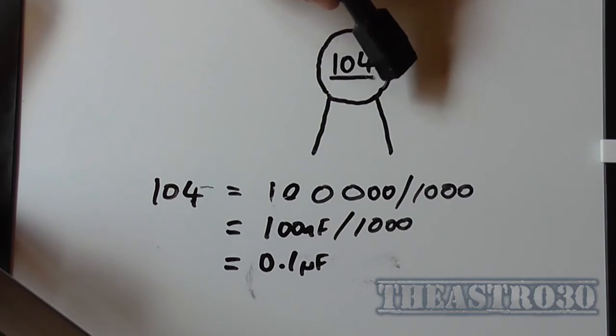Now there may also be a letter after this like a B or a K. That's basically tolerance of the component. Unless you're engineering something that's super critical to have very low tolerance, we just ignore like the B or the K or whatever's on the end of the number.